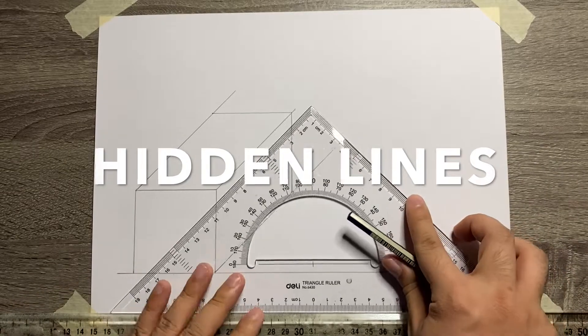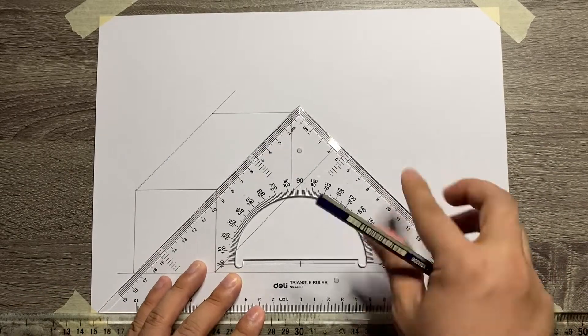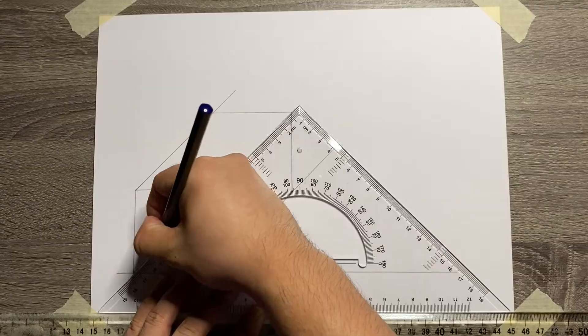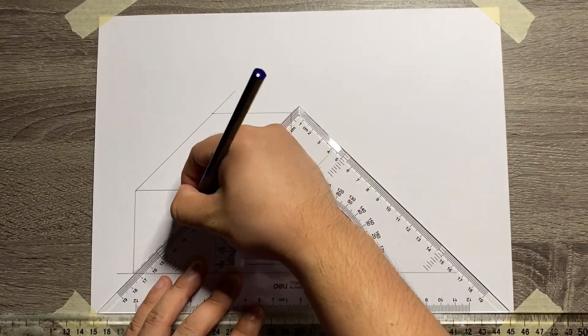Since we're done with the visible lines, let's now add the hidden lines. So from the corner of the front view, 45 degrees hidden line.